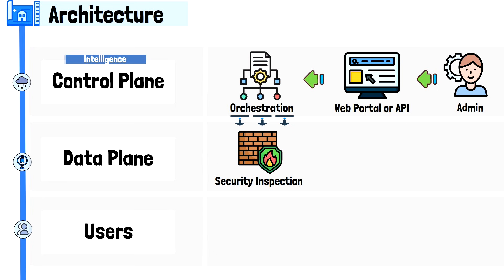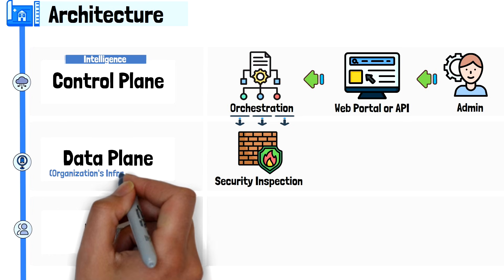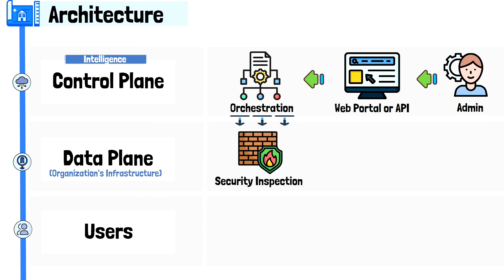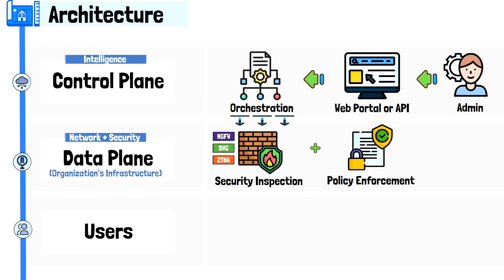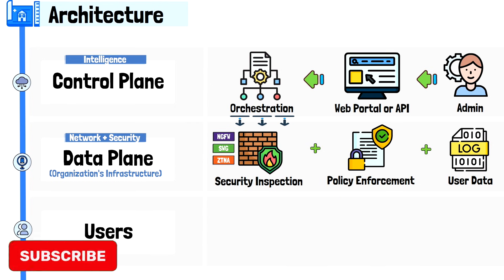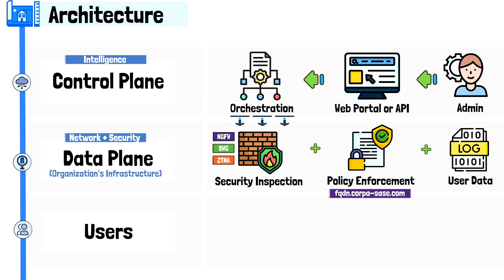In a Sovereign SASE model, the data plane is hosted entirely within the organization's network infrastructure. It is responsible for all security inspection and network connectivity functions, and remains strictly confined within the organizational boundaries — never offloaded to the cloud. The devices at this layer vary by vendor, but should consist of security devices such as next-gen firewalls capable of handling SASE services like secure web gateway and ZTNA enforcement. Rules and policies configured in the control plane are pushed down to devices at this layer, where they are enforced in real time, ensuring that all traffic remains within the organizational boundaries.